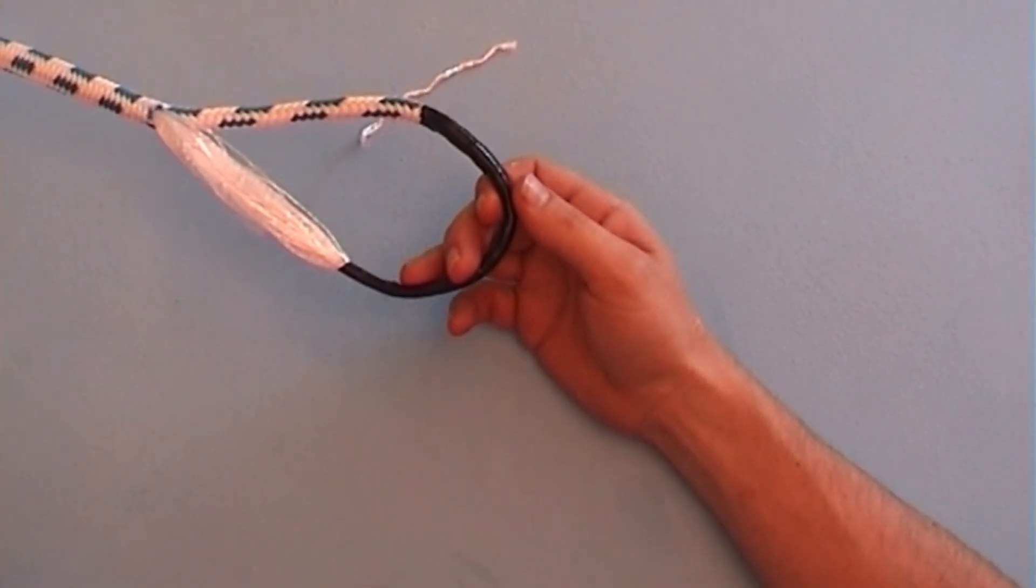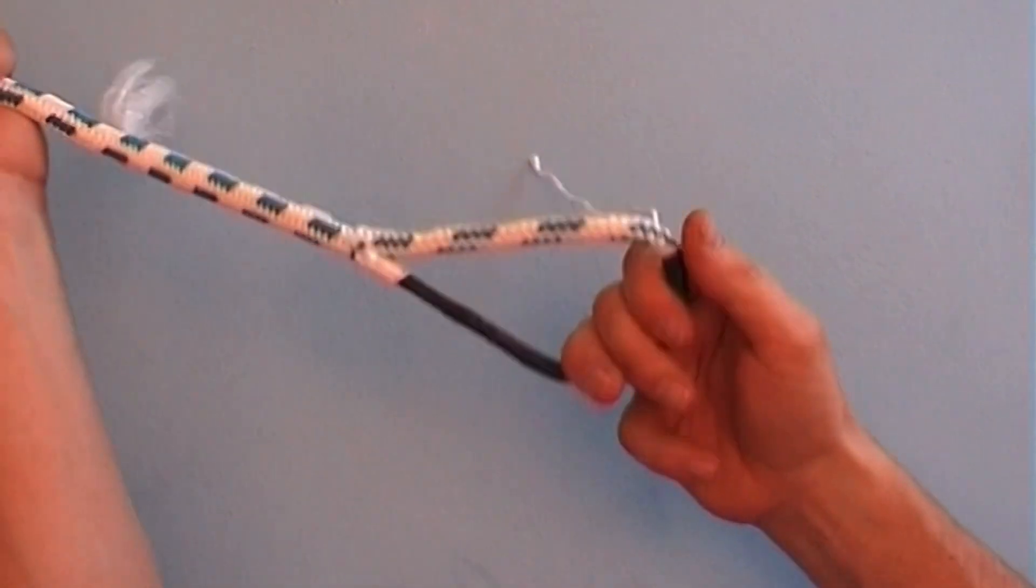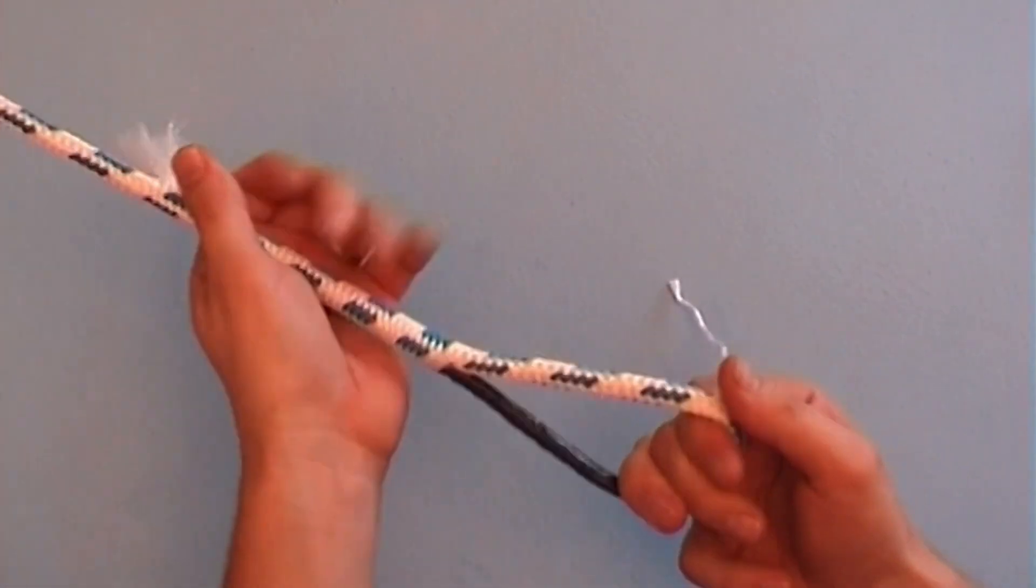This is what it should look like now. Hang the butterfly knot to a strong point and begin milking back.